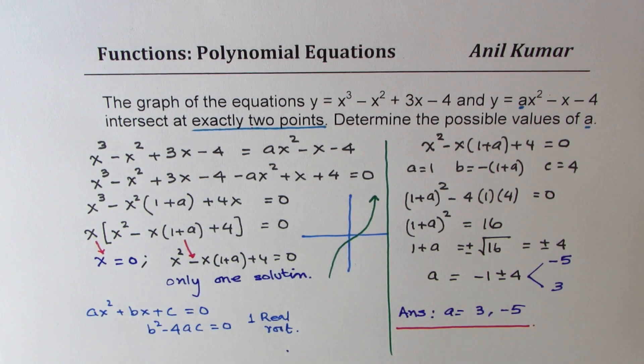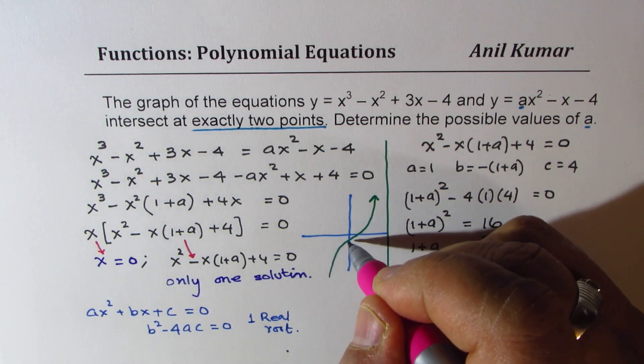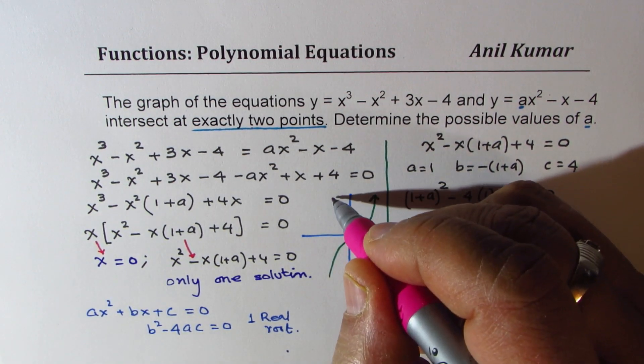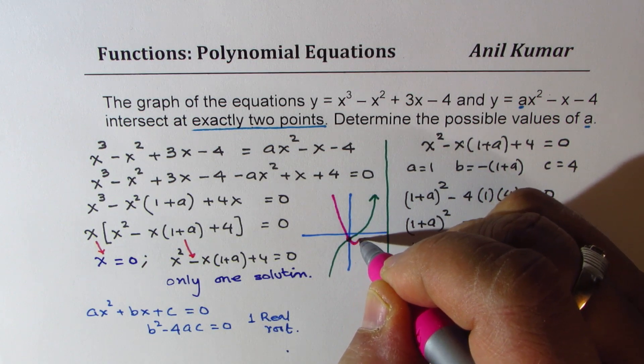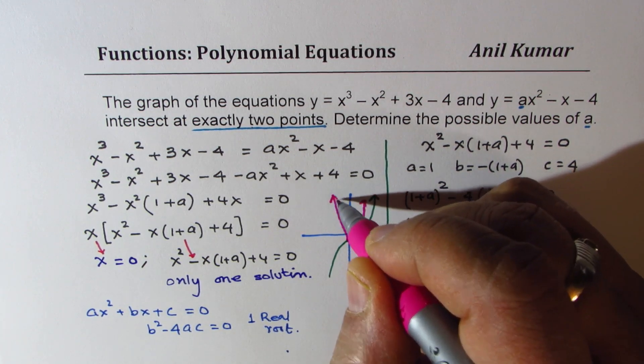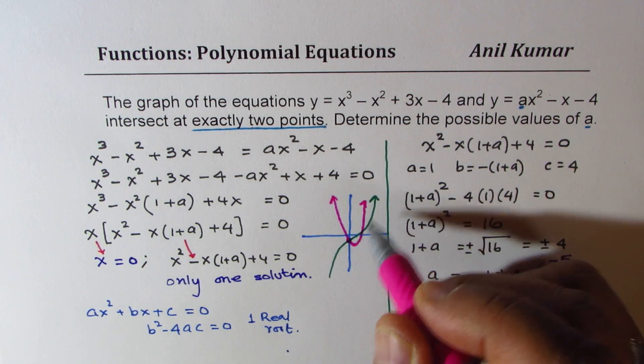So the other graph will be kind of a parabola which will go through this point. Minus 4 is one of these solutions, and it could be kind of like this, you see that part.